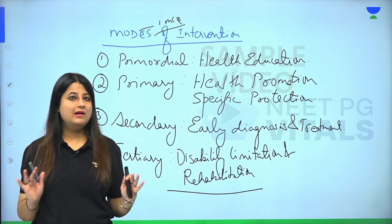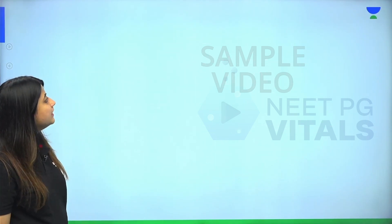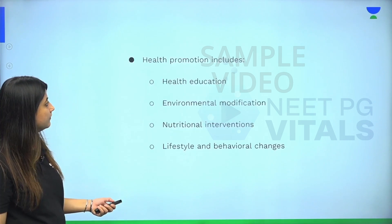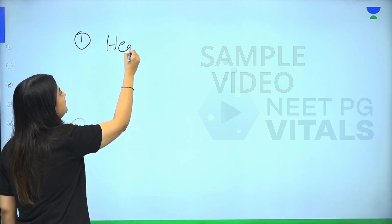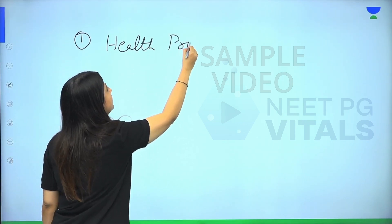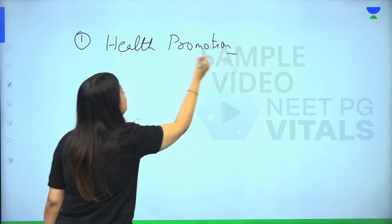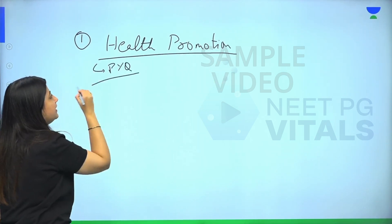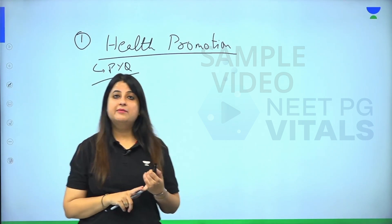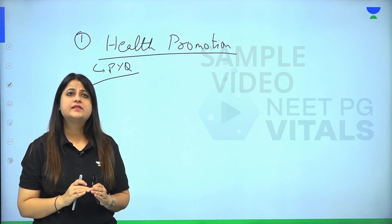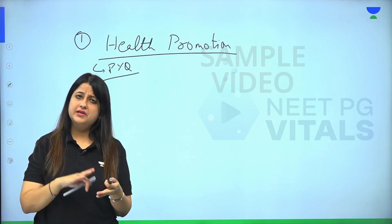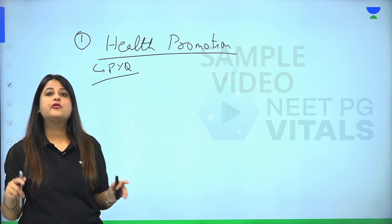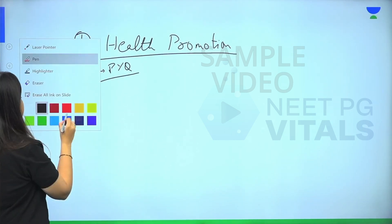Now we're going to understand each level with examples. Primordial is by educating people. In primary, we had the term health promotion — this is a very important previous year question. In community medicine, a lot of definitions turn up in examinations. So you have to remember what is health promotion. Its definition: enabling people to lead a healthy life.